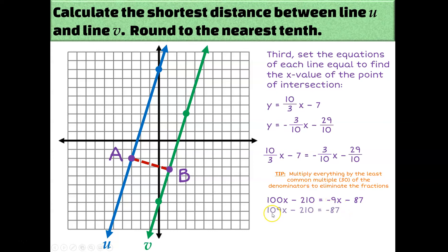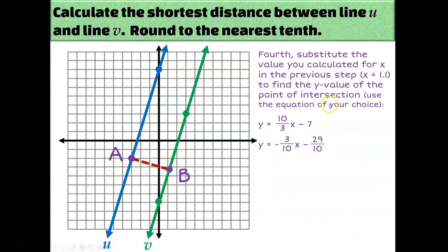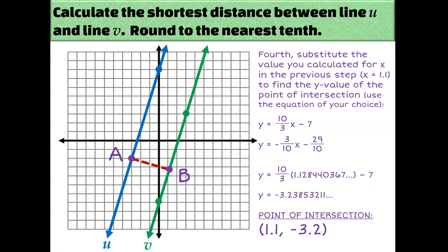They're big numbers, but at least they're not fractions. Now I'll solve the equation: add 9X, add 210, divide by 109 — and we get a pretty ugly answer, but that was to be expected. That's the whole reason we're doing all this extra work — we couldn't identify exactly where B was. But approximately 1.1 seems pretty reasonable for the X value of B. To find the Y value, I'll take the 1.1 and plug it back into the first equation, and when I simplify I get a Y value of approximately −3.2. So B is the point (1.1, −3.2).